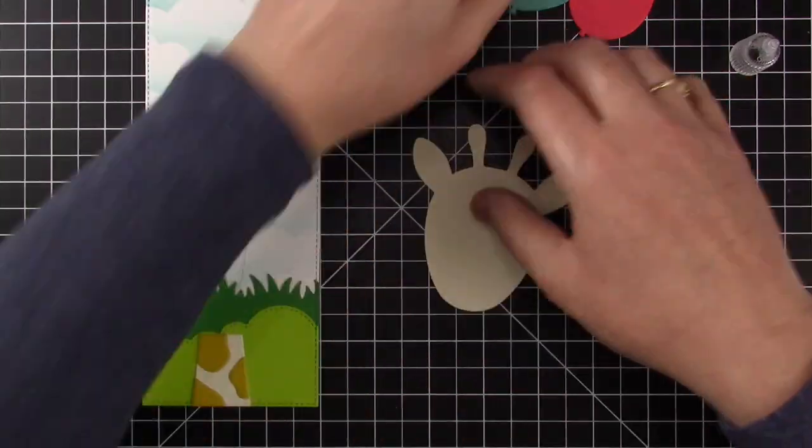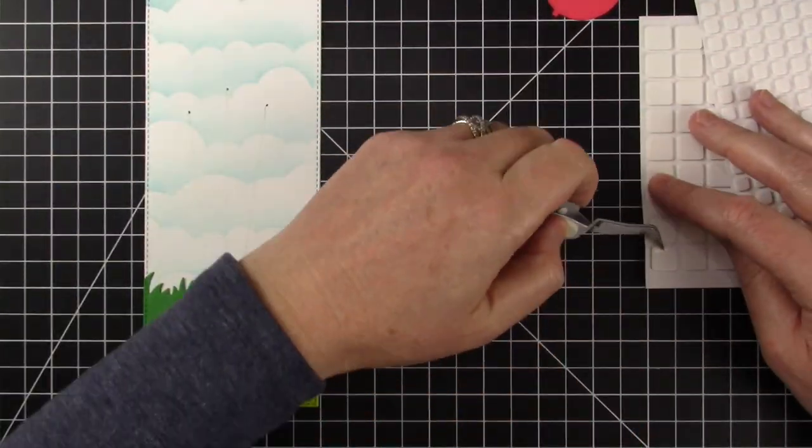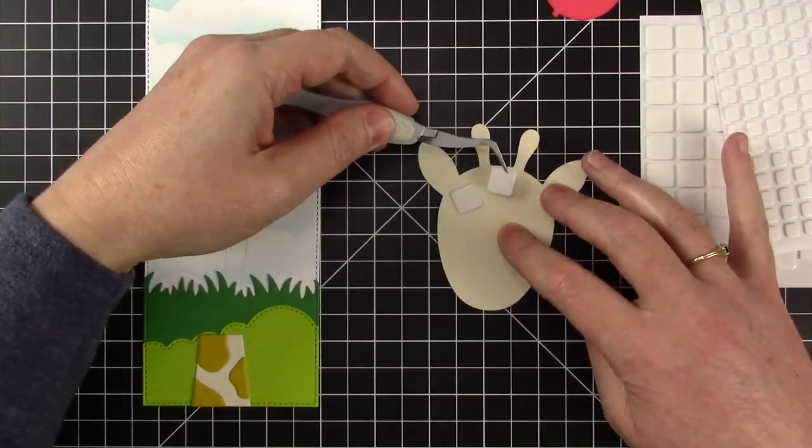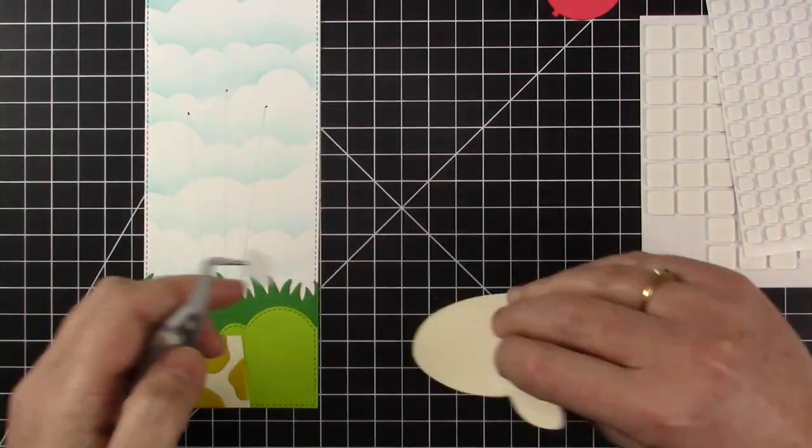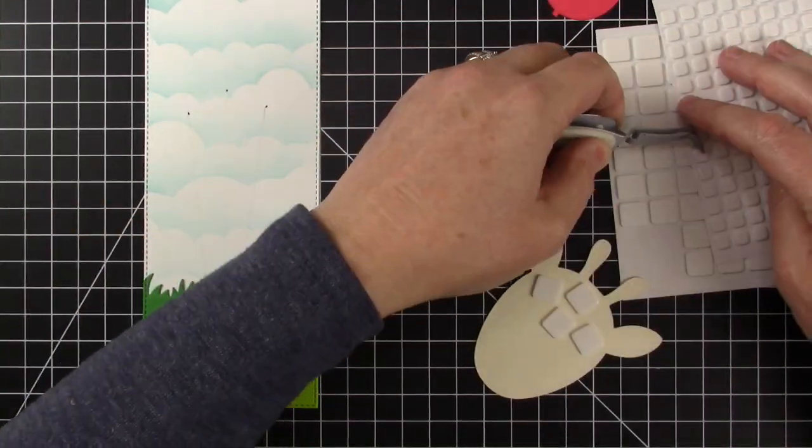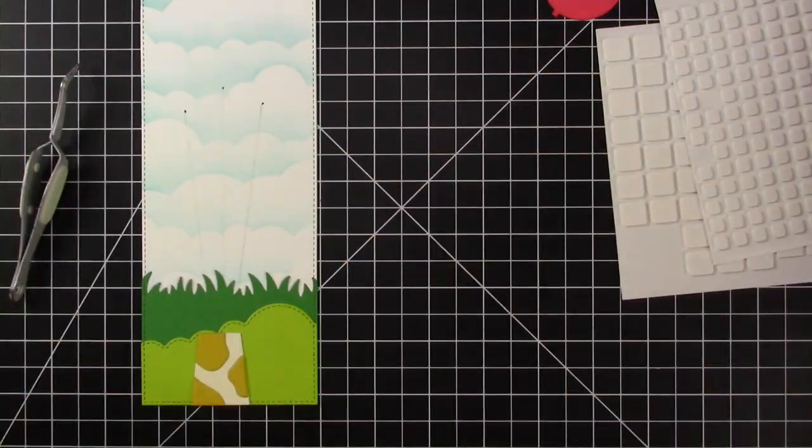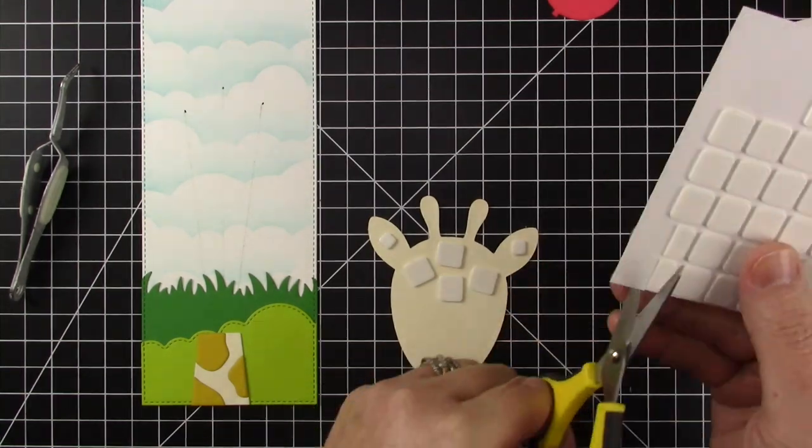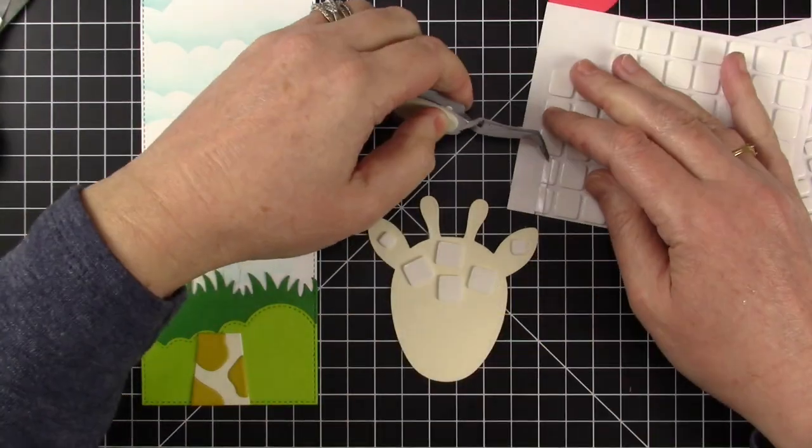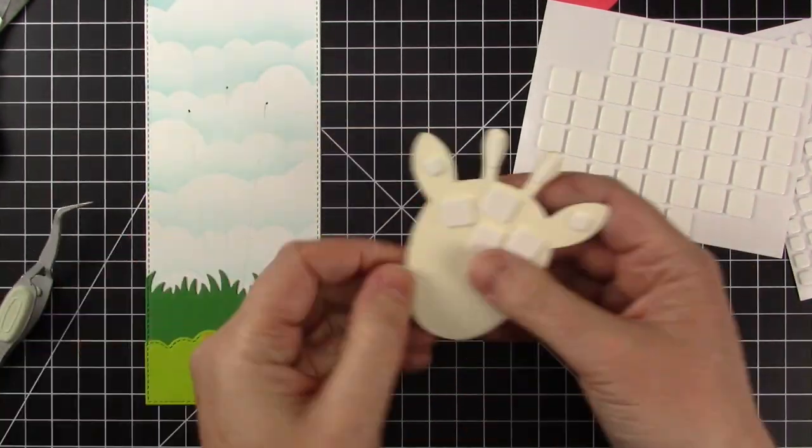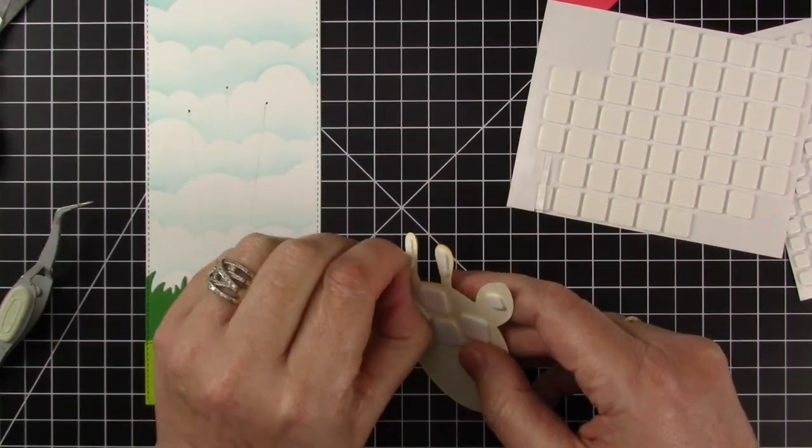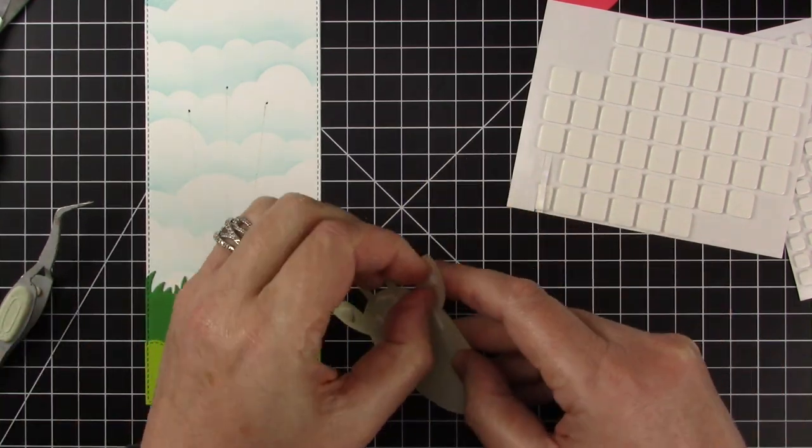Now when I add the foam squares to the head I'm going to be really careful where I position them because I want them only at the top of his head because the bottom of his head is going to be pretty much on four layers of cardstock. So to keep it even just need it on the top. I will cut a strip for the horns. I cut strips of foam squares quite often for those little tiny areas that still need to be propped up.